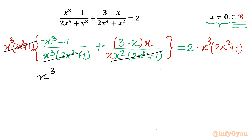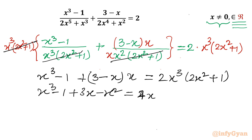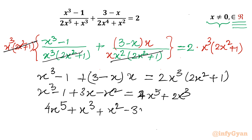The denominator is the same — x cubed times 2x squared plus 1 — so we can cancel these denominators. What is left is x cubed minus 1 plus 3 minus x times x times 2x squared plus 1. Simplifying: x cubed minus 1 plus 3x minus x squared equals 2x squared. So I will write our quintic equation as 4x to the power 5 plus x cubed plus x squared minus 3x plus 1 equal to 0.